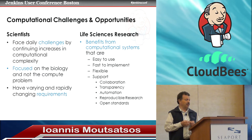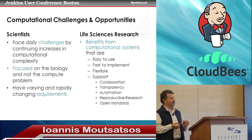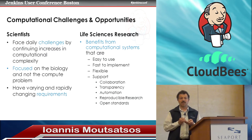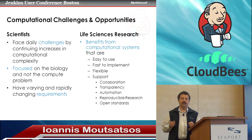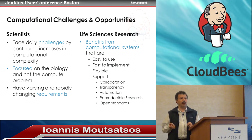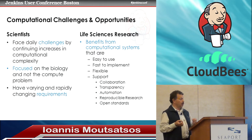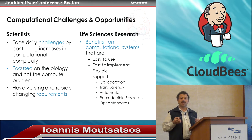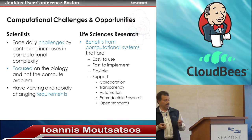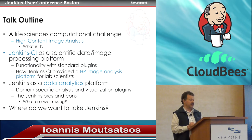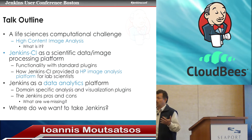The benefits of computational systems that support life sciences come from ease of use, quick implementation, flexibility, and support for a number of attributes critical in doing life sciences and medical research. Those are the ability to collaborate with other people, transparent access to data and processes, automation, what we call reproducible research — being able to reproduce data that other people have generated in the past — as well as open standards that help us work with other people.